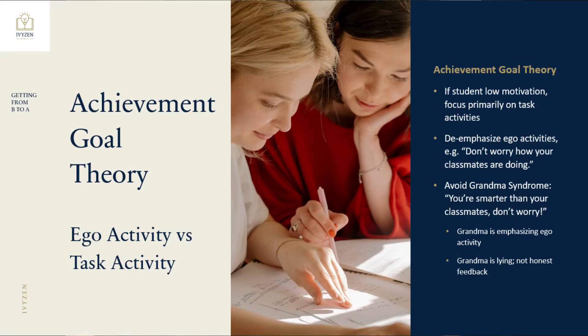If your student has low motivation, you have to focus on task activities — turn everything into a task activity. If they go to a competition, don't say 'you've got to win.' Just say, 'Get a better time than you did last time,' or 'Focus on this one thing we worked on,' or 'Try to do a little bit better on your spelling, a little bit better on your algebra.' Turn it into task activities so they can develop competency.